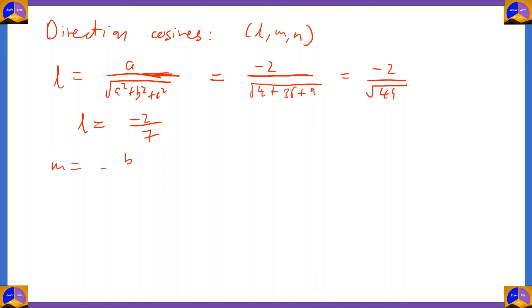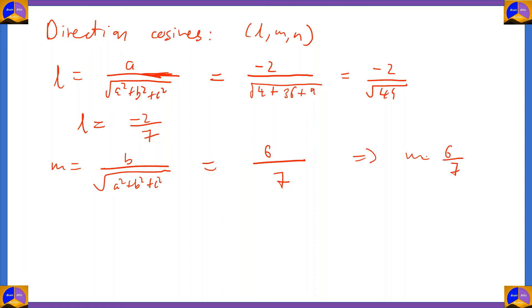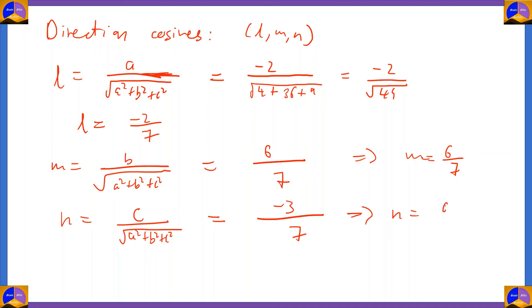Similarly, M = B / √(A²+B²+C²) = 6/7. And N = C / √(A²+B²+C²) = −3/7. So the direction cosines are −2/7, 6/7, and −3/7.